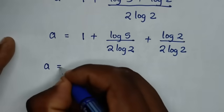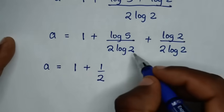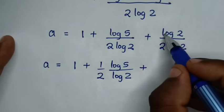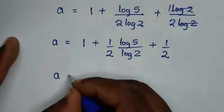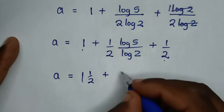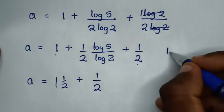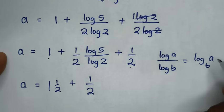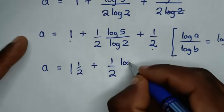Then it will be a is equal to 1 plus, here this is the same as 1 over 2, so it will be 1 over 2 times log of 5 over log of 2. Then plus here, log of 2 cancels log of 2, so it will be 1 over 2. This log of 5 over log of 2 is in the form of log of a over log of b, which is equal to log of a base b. So by applying this form, log of 5 over log of 2 becomes log of 5 base 2.